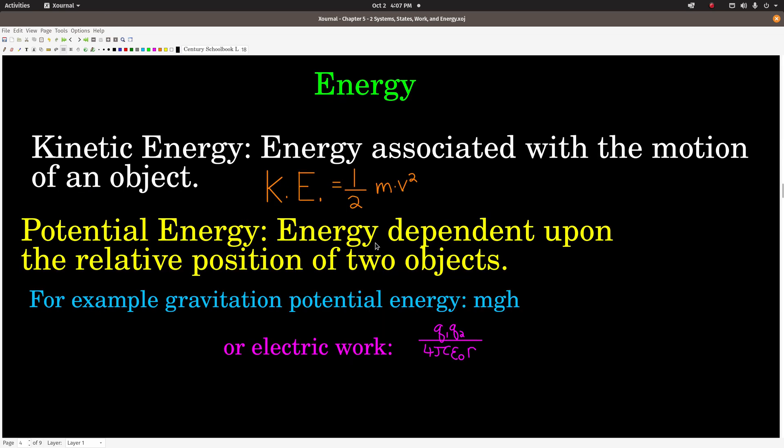Energy - we categorize energy as two basic kinds: kinetic and potential. You can think about kinetic energy as energy that's associated with the motion of some object. The formula, which you should remember because it's definitely very useful, is that the kinetic energy of an object is equal to one-half its mass times its velocity squared.